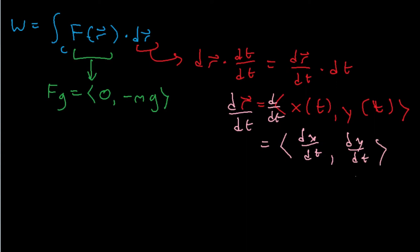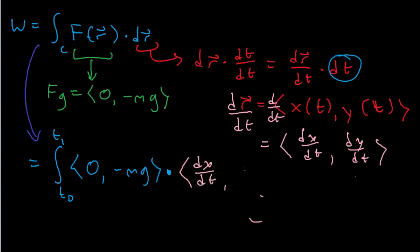So, we can plug this into the original integral. And since we changed it to be in terms of time, we have to change the bounds as well. From t0 to t1, put in the gravitational force dot, and then the parametric, or that's dr, dx over dt, dy over dt, dt.